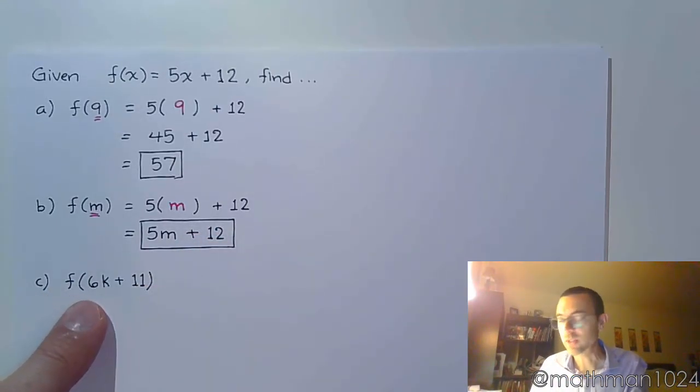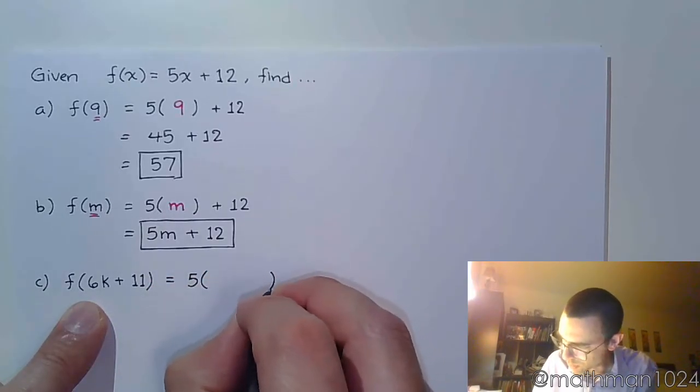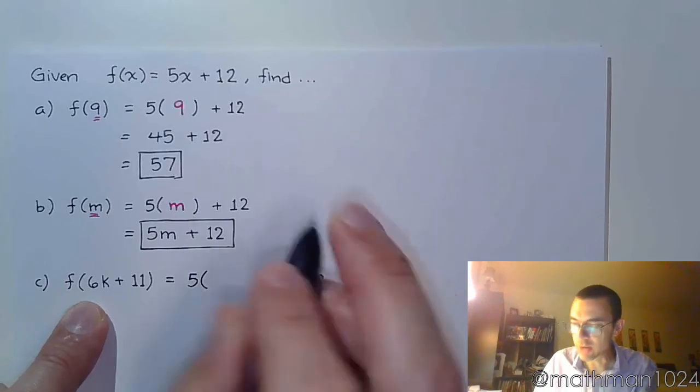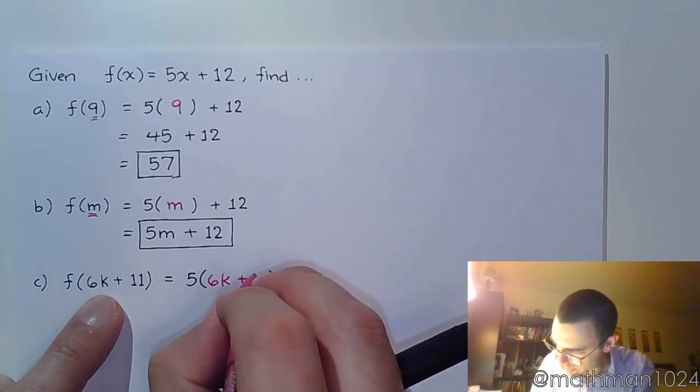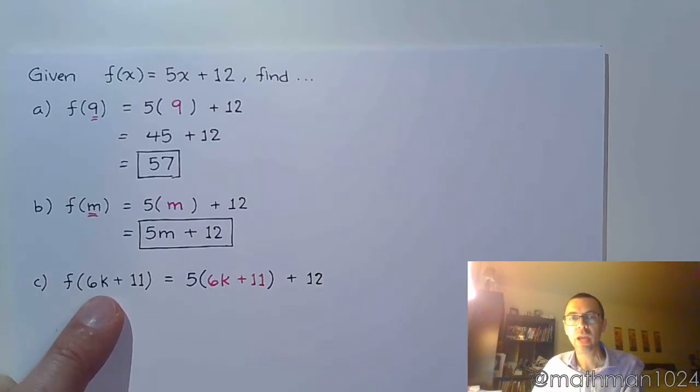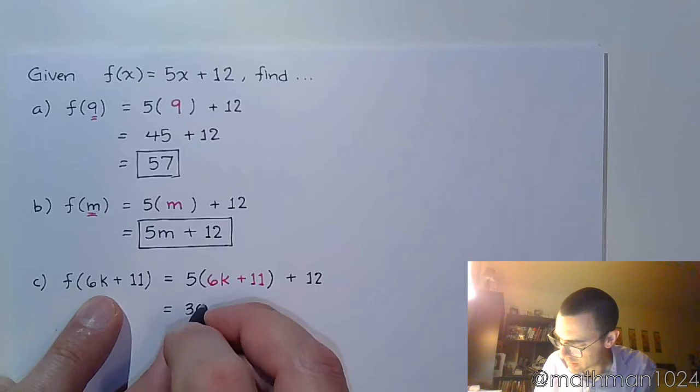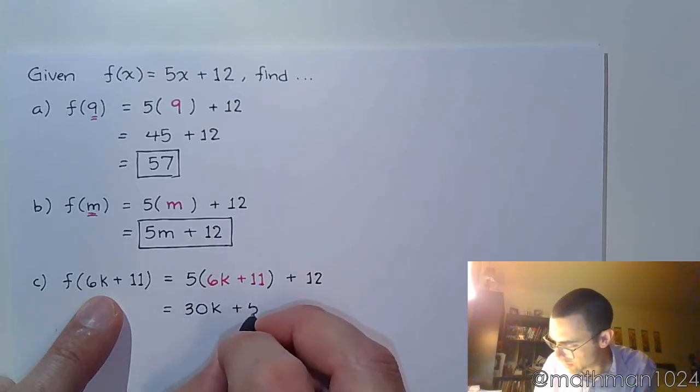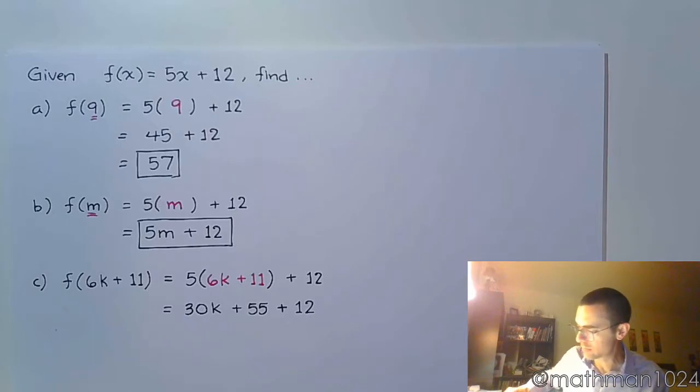Well, let's look at f of 6k plus 11. Again, you replace the x with parentheses, and make sure the parentheses are spread out far enough so that we can get the 6k plus 11 in there, because that is now my input. And it's pretty simple from here. Multiply, distribute, combine like terms. So here, when I distribute, I get 30k. 5 times 11 is 55. And then I've got plus 12. And so I can combine these constant terms here at the end.